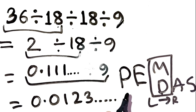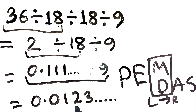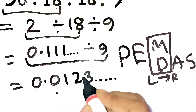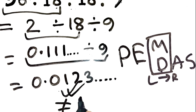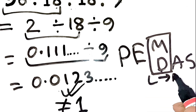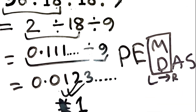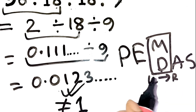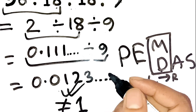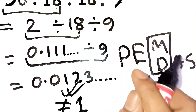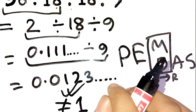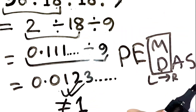Yeah, a really small number. So the correct answer is 0.0123 repeating, not 1. See how following the left-to-right rule completely changes the result? If you have any valid arguments or want to show a different method, write it down in the comments. Thanks for watching!